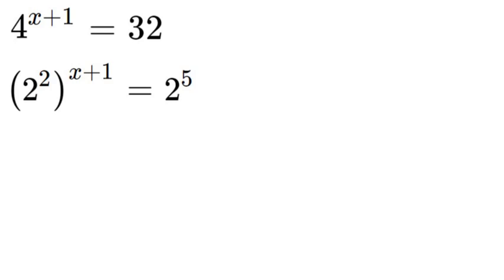So if you recall that if you have an exponent to the power of an exponent then you multiply the exponents. So in this case we would have 2 to the power of 2x plus 2 is equal to 2 to the power of 5. So now we've simplified that a little bit.